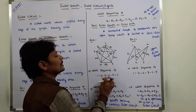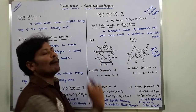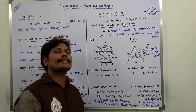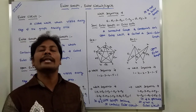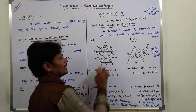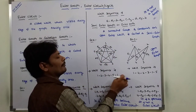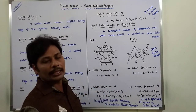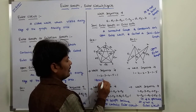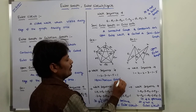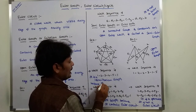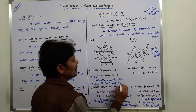Next, the walk sequence 1, 2, 3, 4, 5, 1 — is this a Hamiltonian cycle? A Hamiltonian cycle requires a Hamiltonian circuit in which every vertex of the graph is visited exactly once. This walk covers vertices 1, 2, 3, 4, 5 and returns to 1 — it is a closed walk visiting every vertex exactly once, so it is a Hamiltonian cycle and the graph is a Hamiltonian graph.